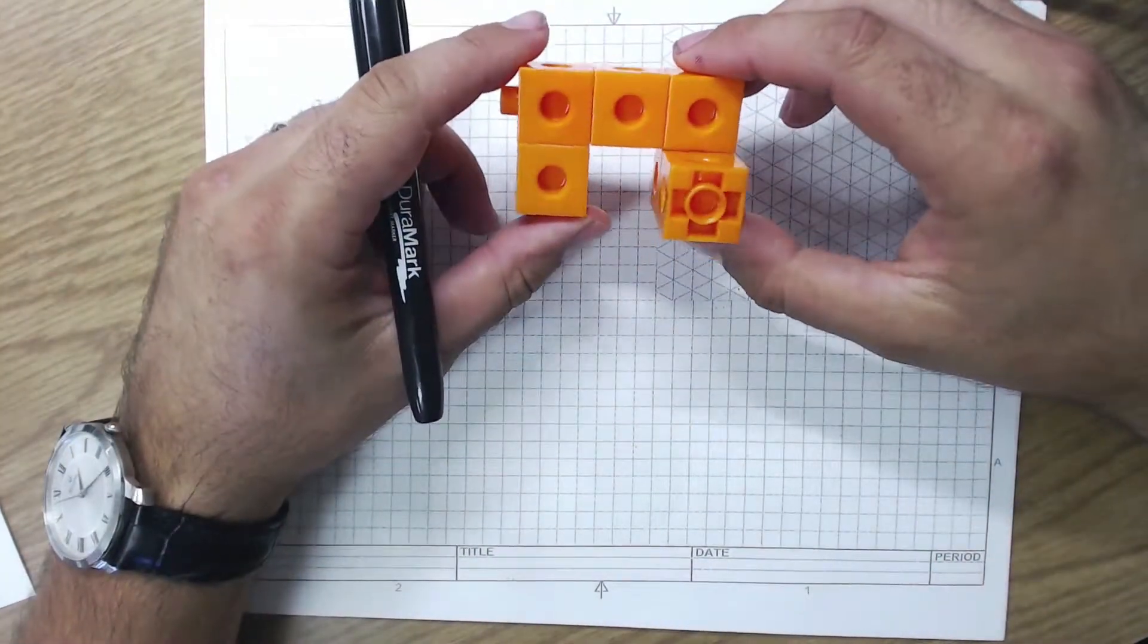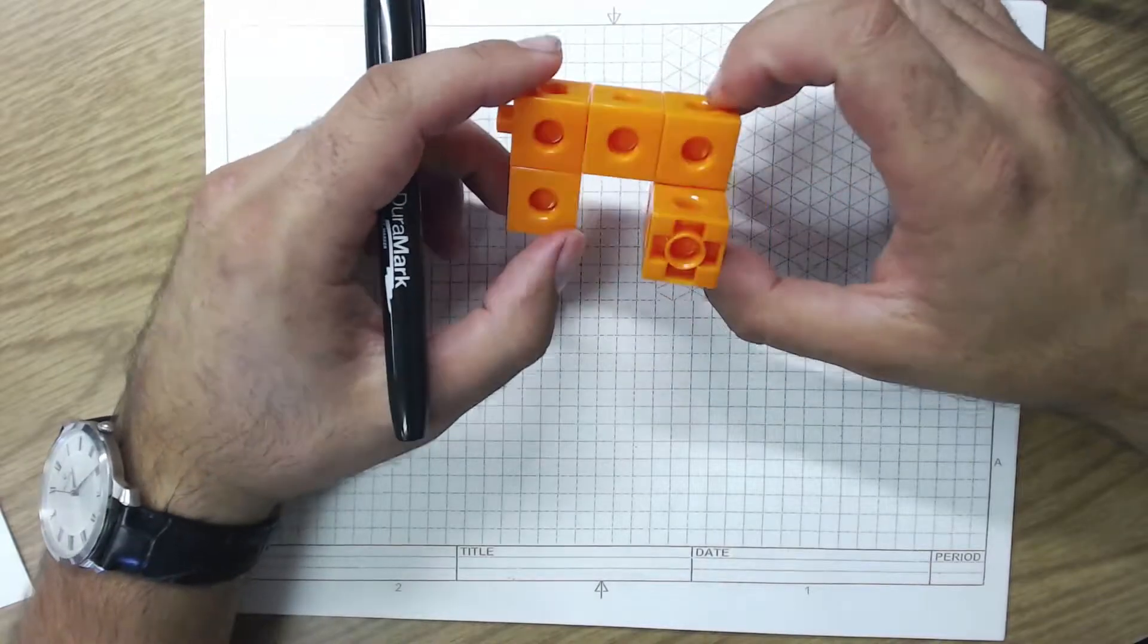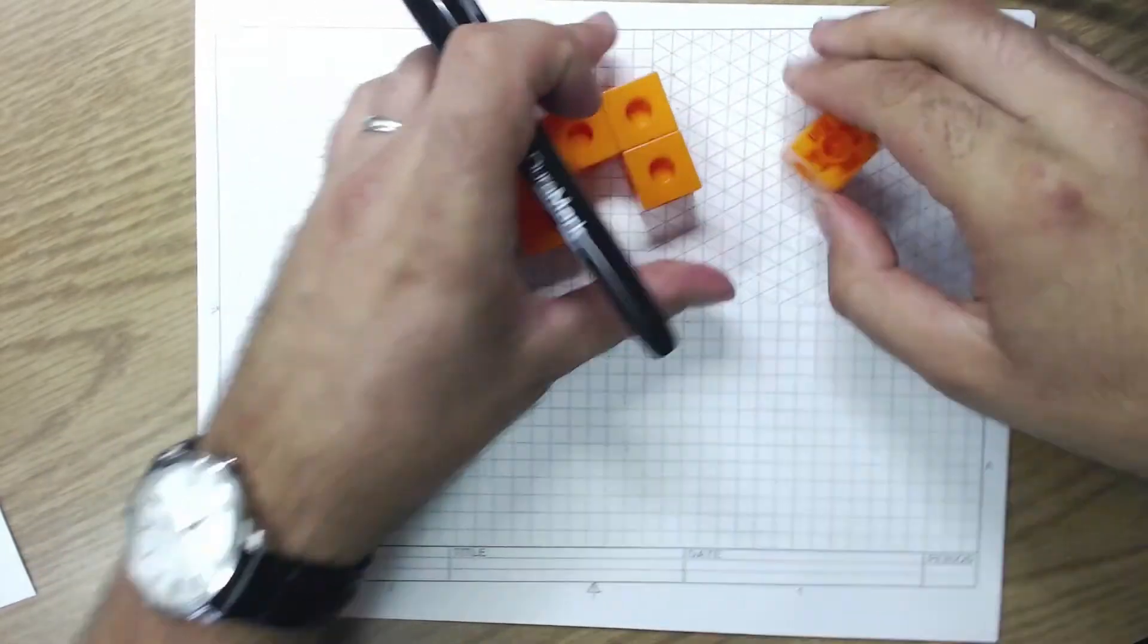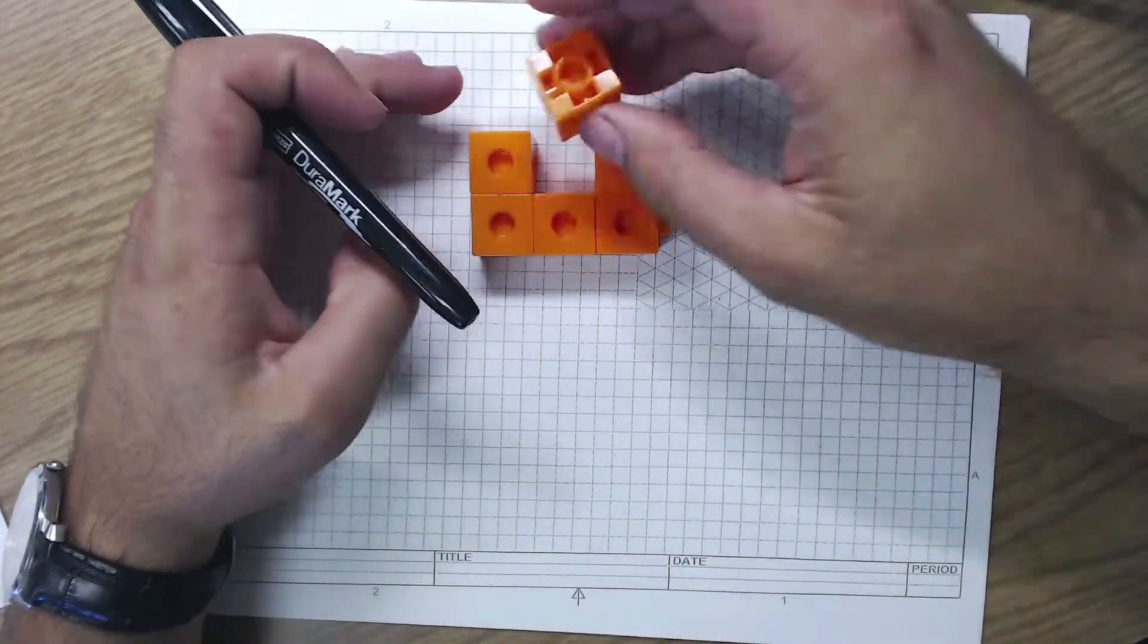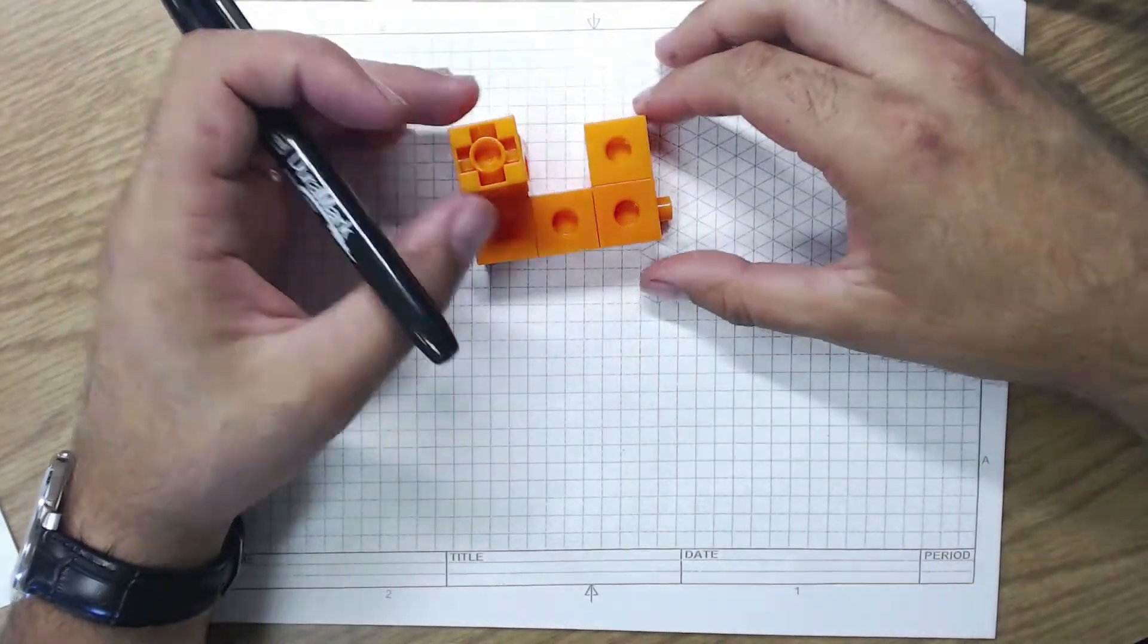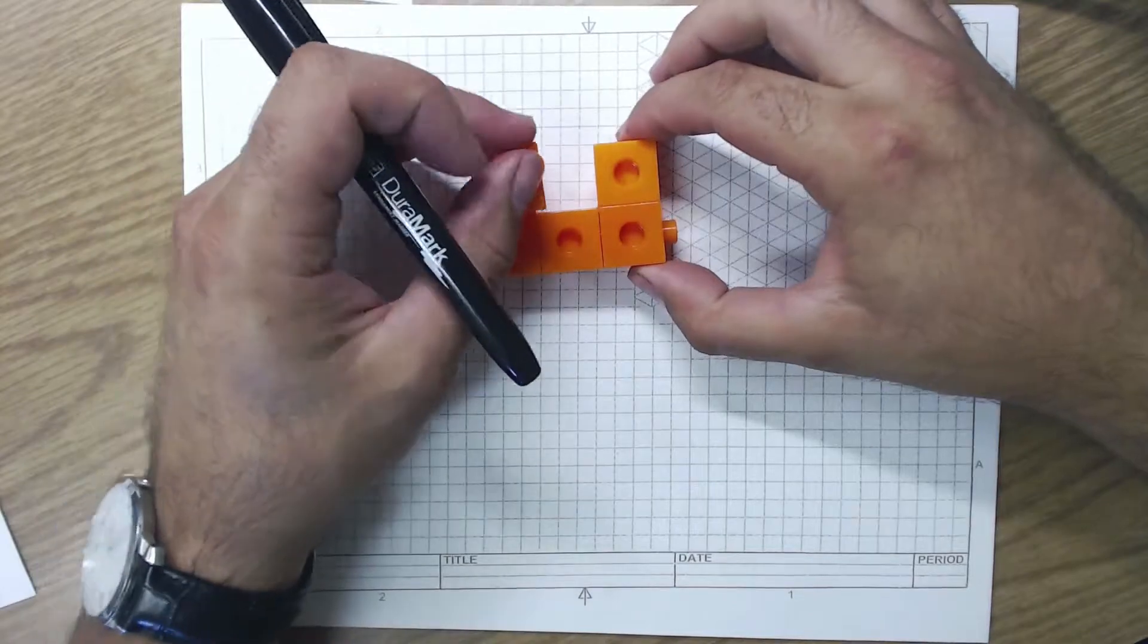First one we're going to do is this one here. Take six pieces to make this one. Start off with a U. And I'm going to take this piece here and we're going to put it on this end. So that's what the part looks like.